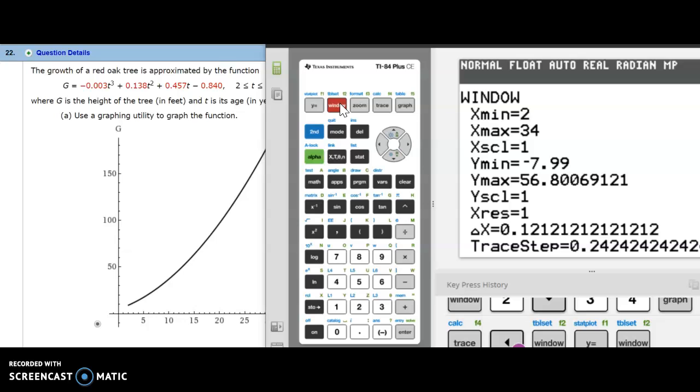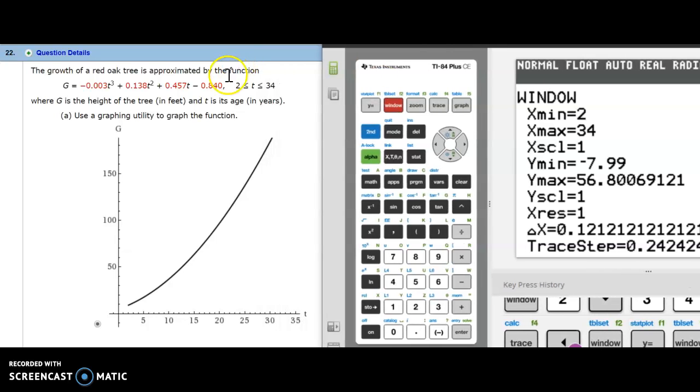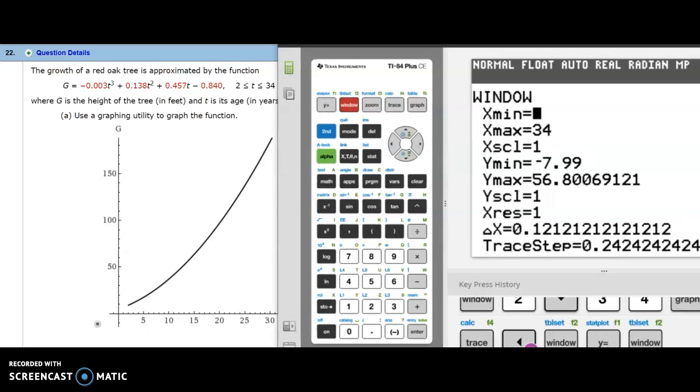I have to go to the window and the values that you see here for t, that's what we want to make our x min and x max. So we have it go from 2 to 34. And then the y values we can adjust, but let's just get a picture of the graph.